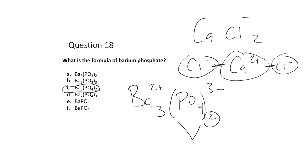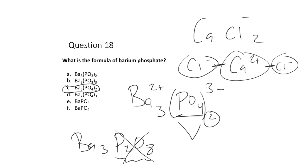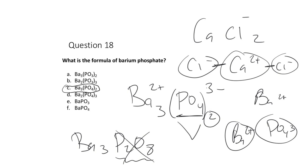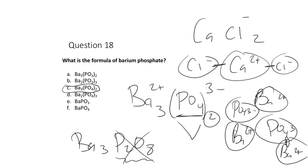Picturing Ba₃(PO₄)₂: we have barium cations and phosphate anions maintaining that 3:2 ratio, where we keep the phosphate as a distinct unit — four oxygens attached to one phosphorus with a 3− charge — and have two of them per three barium ions.